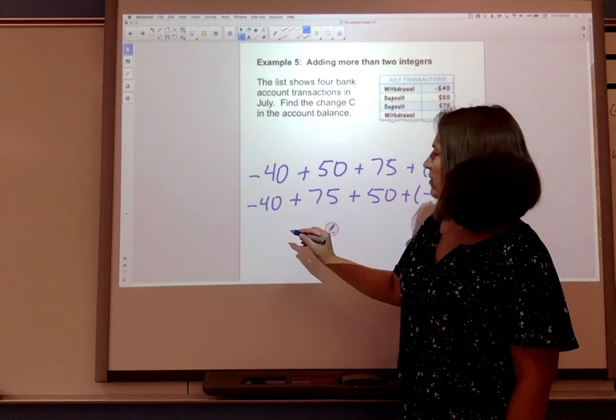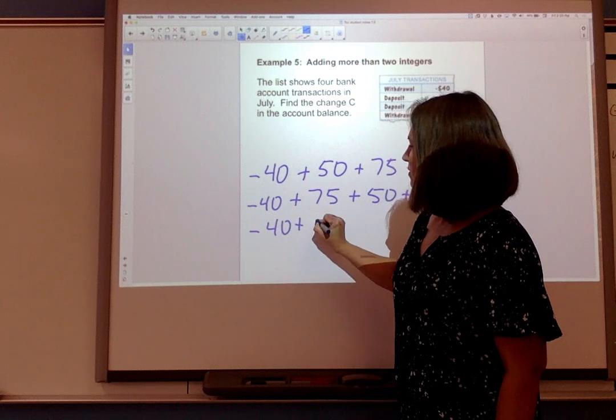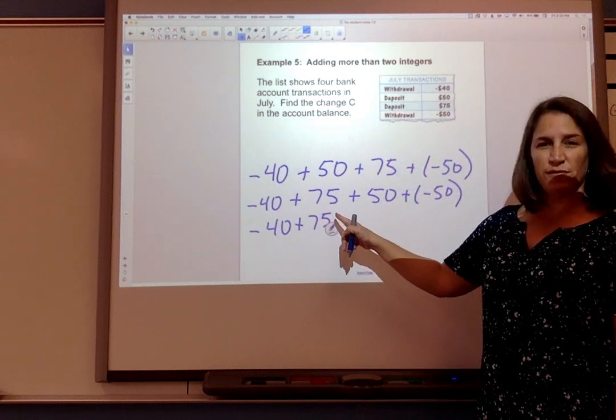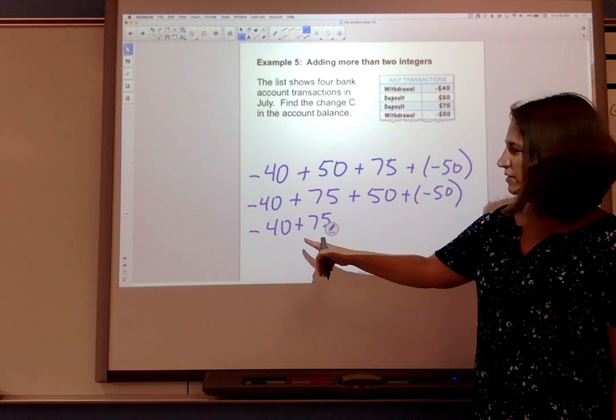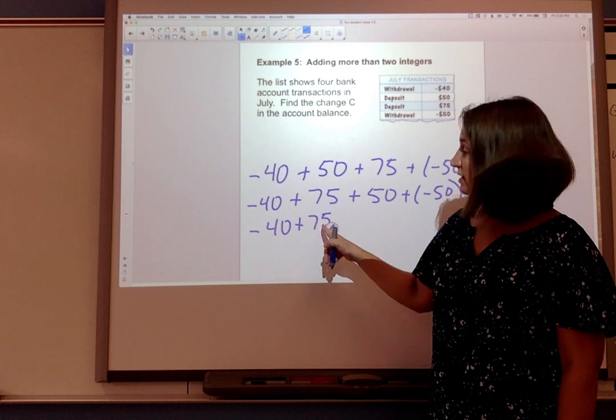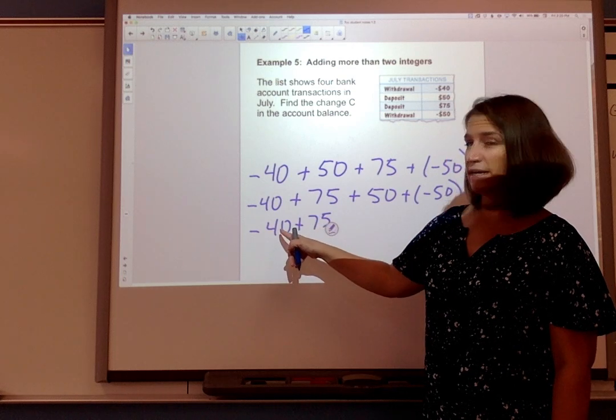So now I'm left with -40 + 75. The absolute value of 75 is 75. The absolute value of -40 is 40. 75 - 40 is 35.